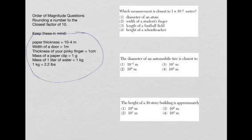Okay, let's take a look. So in this first one here, it's asking about the measurement closest to 1 times 10 to the minus 2. If we take that in scientific notation, I take the number 1 and slide the decimal over, that's going to be .01 meters.